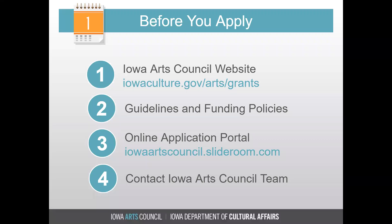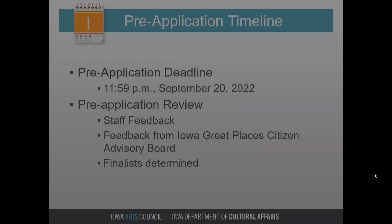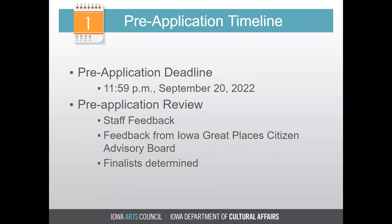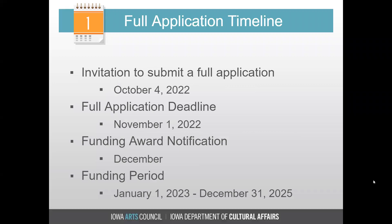Make sure you contact staff well in advance of the deadlines. The pre-application is open now, and the deadline is September 20th. Once the deadline occurs, the pre-applications will receive staff feedback and review, as well as feedback from the Iowa Great Places Citizen Advisory Board. Following the pre-application review and feedback, finalists will be determined. By October 4th, you'll receive communication and an invitation to submit a full application, if you are invited to do so. The full application deadline is November 1st, 2022. In December, we'll announce the funding award notification, and the funding period will be January 1st, 2023 to December 31st, 2025.